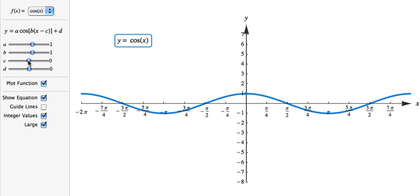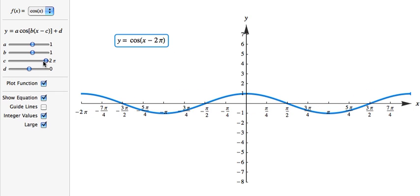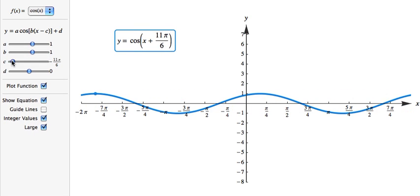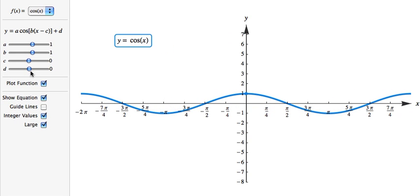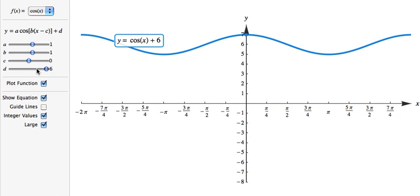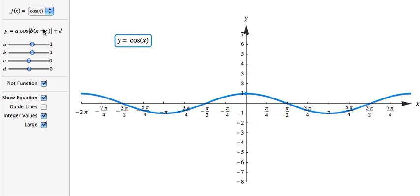Going over to cosine and then the c, again, we move to the right as c increases, move to the left as c decreases or increases in the negative direction. And then the d goes up and goes down. So you should be familiar with this because we've done this basically all along with all the other functions, all these transformations. And we're just including that now with the trig functions.